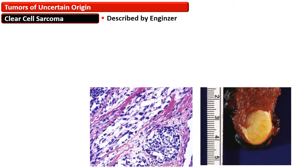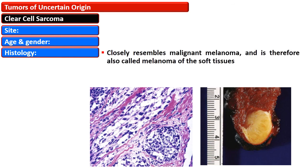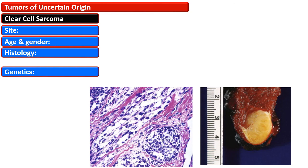Clear cell sarcoma is also a tumor of uncertain origin, described by Enzinger. It affects the skin and subcutaneous tissue, especially of the hands and feet of young males. Histology closely resembles malignant melanoma and this clear cell sarcoma is sometimes called melanoma of the soft tissue. Genetically it is differentiated from cutaneous melanoma by translocation t(12;22) and presence of EWSR1-ATF1 fusion gene.